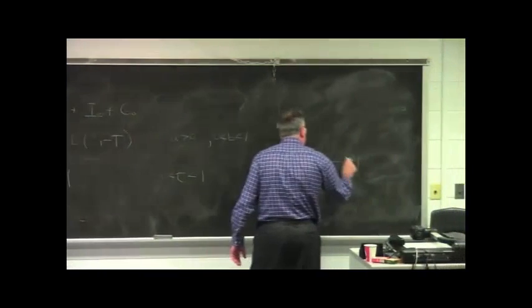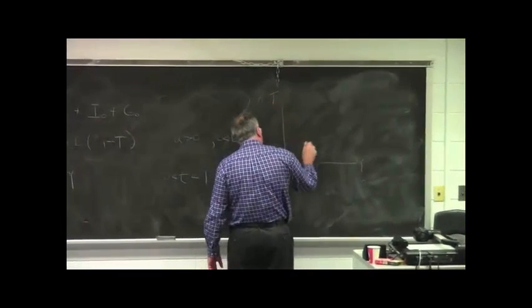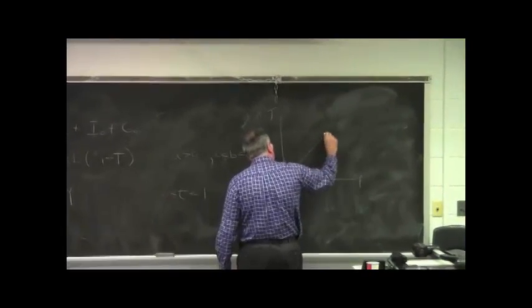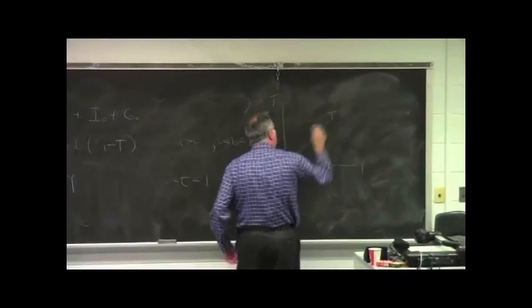Here is Y. Here is T. This tax equation is just a straight line coming out of the origin with a slope of little t.